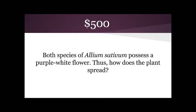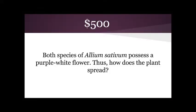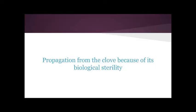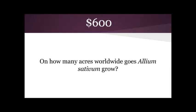Biological description for 500: What is propagation of the clove because of its biological sterility? Biological description for 600: What is 2.5 million acres?